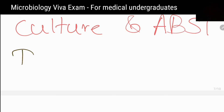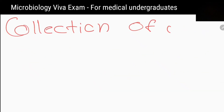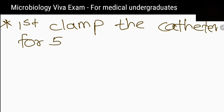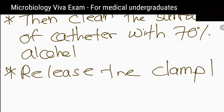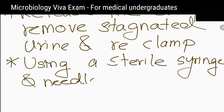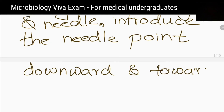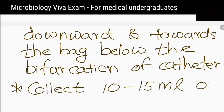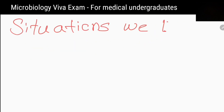Can we collect urine from the urine bag for those investigations? No, we can't. Then how are you going to collect a urine sample from a catheterized patient? First, clamp the catheter for 5–10 minutes. Then clean the surface of the catheter with 70% alcohol. After that, release the clamp to remove the stagnant urine and re-clamp. Using a sterile syringe and needle, introduce the needle point downwards and towards the back below the bifurcation of the catheter. Then collect 10–15 mL of urine into a sterile dry screw-cap bottle.